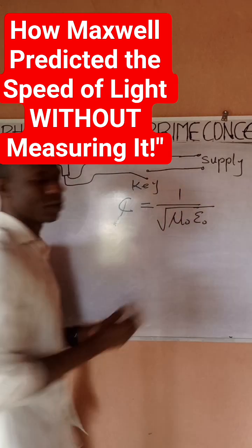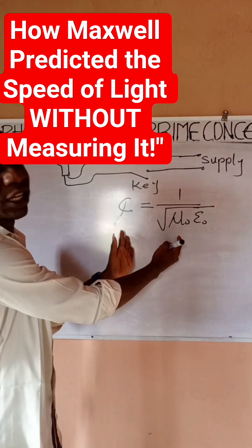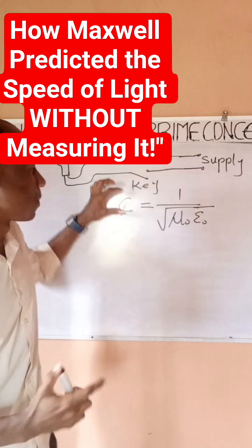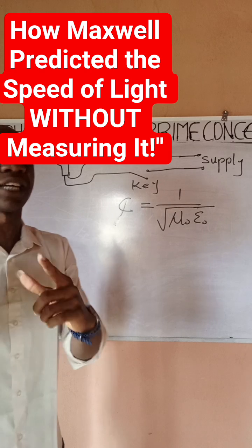So James Clark Maxwell was able to arrive at this relationship and then he used this to calculate the value for the speed at which light will travel from this point to this bulb, which is estimated to be very big and very fast.